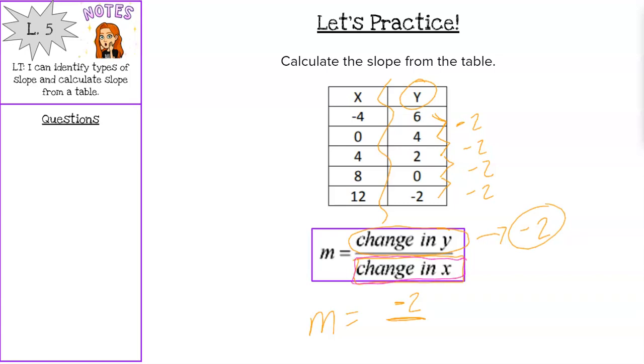All right, we'll do the same thing for those x values. Negative four to zero, we would need to add four. Zero to four, add four. Four to eight, add four. Eight to twelve, add four. So our change in x is positive four.